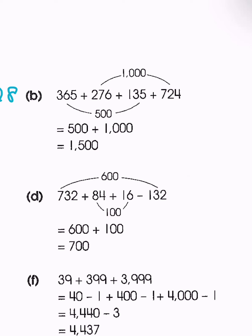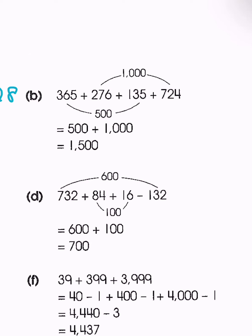In a similar manner, we have 365 plus 276 plus 135 plus 724. We can add all of them in order, but since we have addition only, the order doesn't matter. We're going to look for ways to group numbers so it's easy to add them. We see two numbers ending with 5 — when two numbers ending in 5 are added, the last digit equals 0, which is easy to work with. Adding those gives us 500.